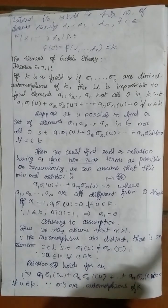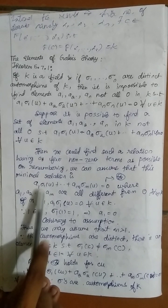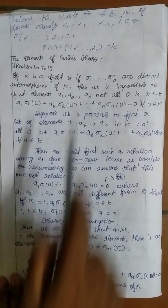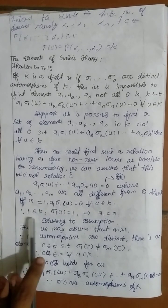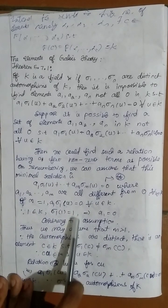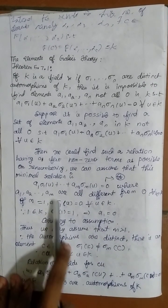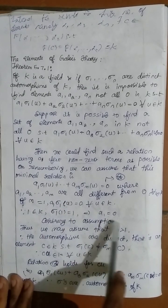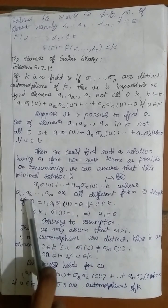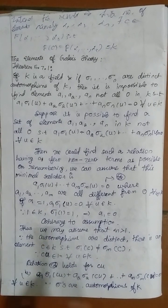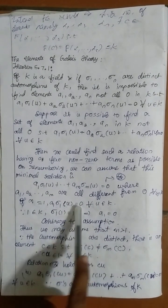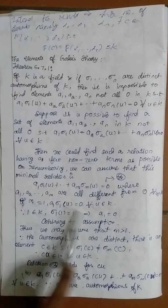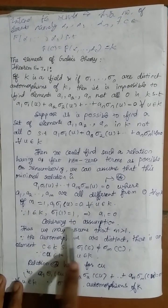If we assume m equals 1, then we get a1·sigma_1(u) = 0 for all u belonging to k. Since k is a field, it contains the multiplicative identity 1. Since 1 belongs to k, we have sigma_1(1) = 1. Substituting into the relation gives a1 = 0. This is a contradiction to our assumption because we already assumed that a1, a2, ..., am are all different from zero. A multiplicative identity of a field always maps to itself under an automorphism. So this is a contradiction, and we assume that m is greater than 1.